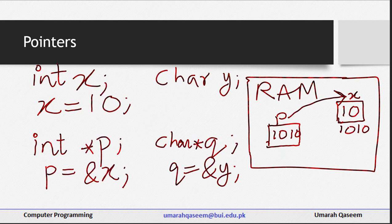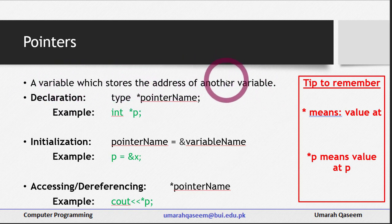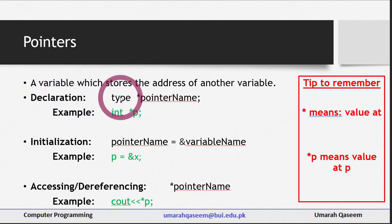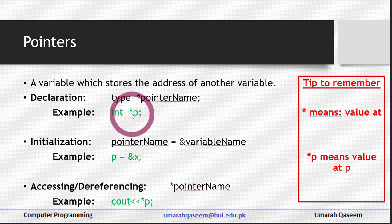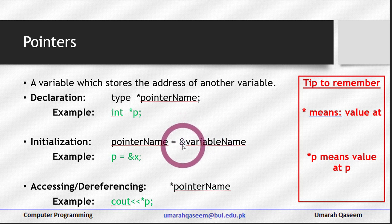Now let's look at this whole thing more formally. A pointer is a variable which stores the address of another variable — it's that simple. Whenever we study something, we need to see declaration, initialization, and how to access that variable. To declare a pointer, we write the data type, then asterisk (*), then the name of the pointer — for example: int *p. To initialize, we write the pointer name, equals, ampersand (&), and then the name of the variable whose address we want stored — for example: p = &x.